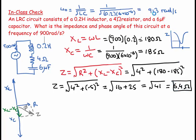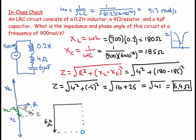Interestingly, even though XL is 180 ohms and XC is 185 ohms, they largely cancel each other, resulting in a total impedance of only 6.4 ohms. In the phasor diagram, Z is 6.4 ohms, R is 4 ohms, and the net reactive component is 5 ohms. The angle will be greater than 45 degrees since Z (6.4) is larger than R (4).